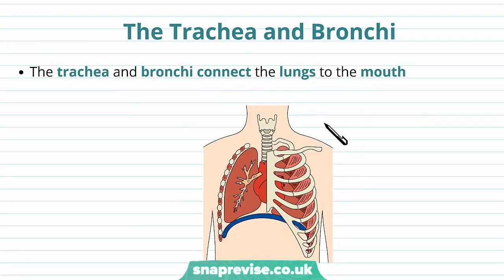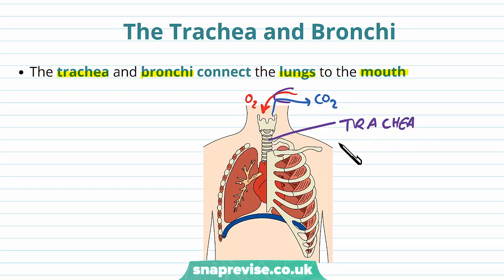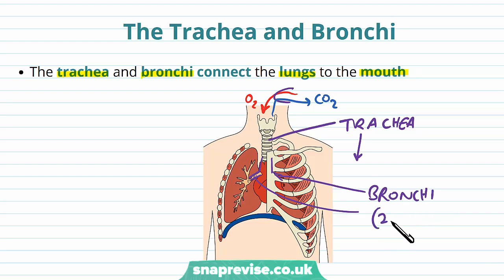Let's talk about where the lungs begin and the larger tubes that lead into the more detailed parts of the lung — the trachea and the bronchi. These are the tubes that connect the lungs to the mouth. As we breathe in, oxygen enters through the mouth; as we breathe out, carbon dioxide escapes. The first structure is the trachea, a large tube going down the neck, which then divides into two main tubes known as the bronchi — singular: bronchus.